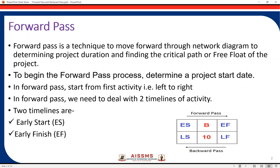When we say the critical path, it is the longest sequence of activities right from the start of the project till the end of the project. And float basically is a measure of the amount of time an activity may be delayed without delaying a succeeding activity or the whole project finish.